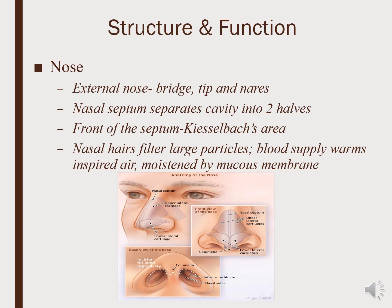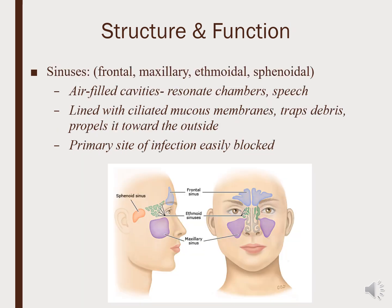The nose has a bridge to the tip and then two nares. The septum separates the cavity into two halves. It is very vascular, and the front of the septum has Kiesselbach's area, which is very prone to nosebleeds. Nasal hairs filter products that might be breathed in and warm and moisten the air. The four sinuses are the frontal, maxillary, ethmoidal, and sphenoidal. These cavities serve as resonant chambers to help with speech and trap debris before it is breathed in, but they are also a primary site of infection if they get blocked.